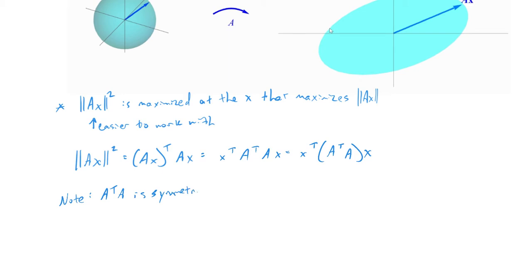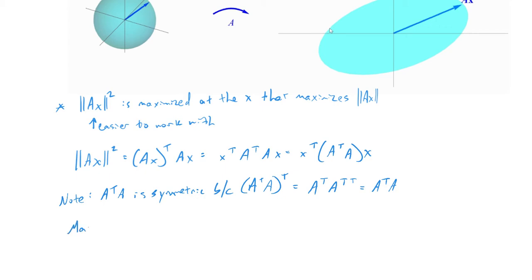I'll show why A^T A is symmetric. When I transpose A^T A, I get (A^T A)^T. Changing the order gives A^T times (A^T)^T, which is A^T times A — the original matrix. So when I transpose it, I get the original matrix, meaning it is in fact symmetric. Now we want to maximize the quadratic form x^T (A^T A) x.